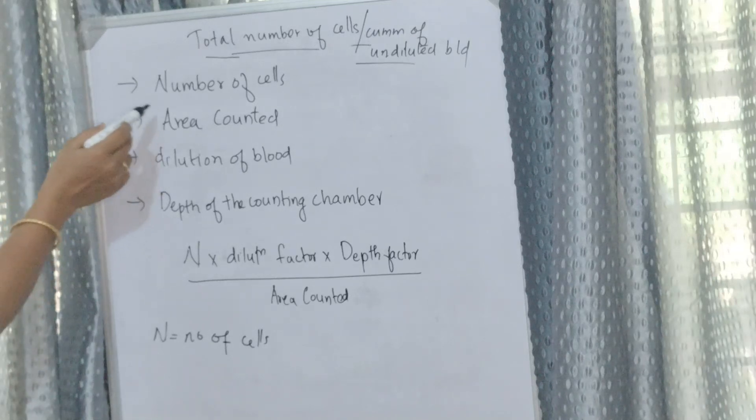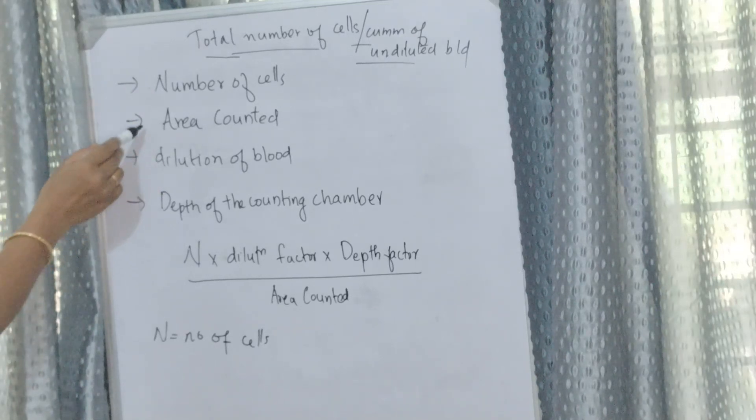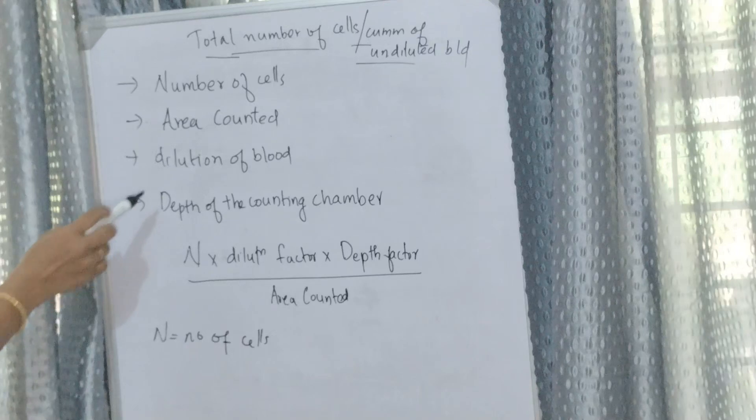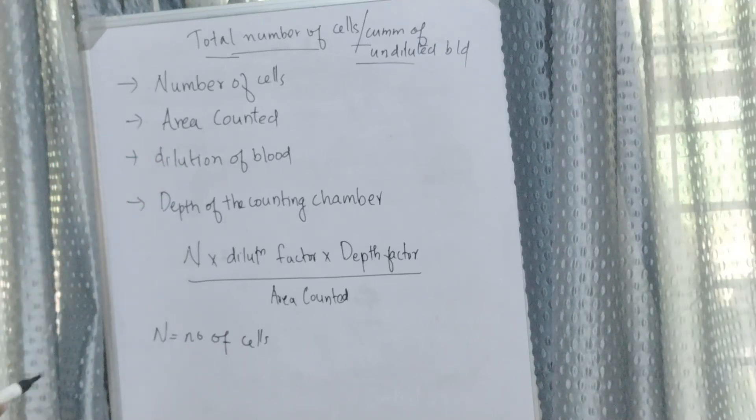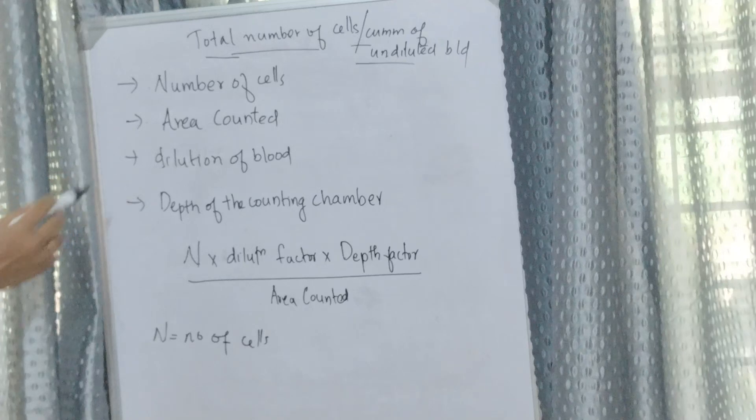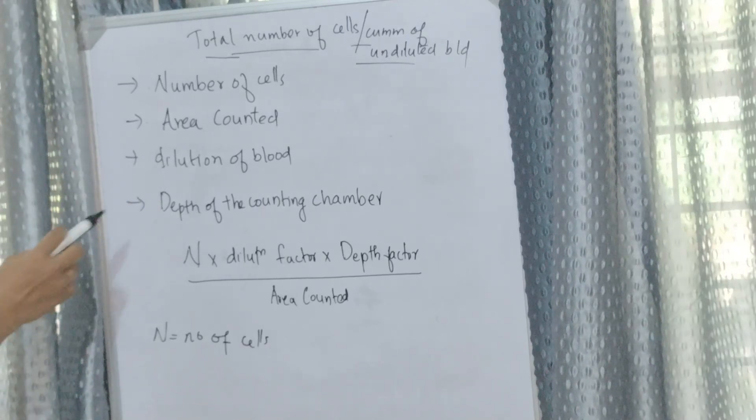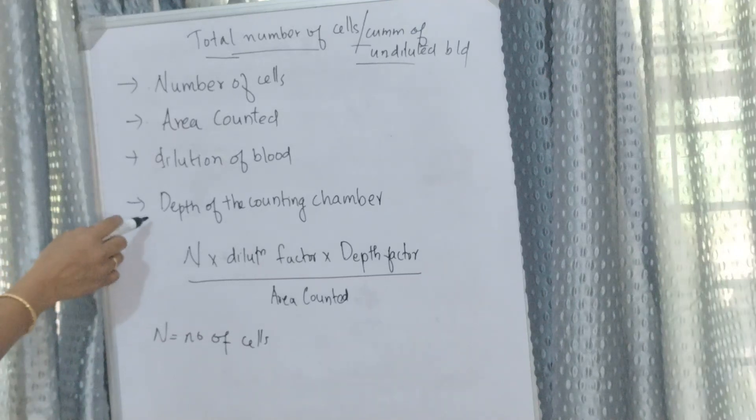By knowing the number of cells, area counted (which will be different for RBC and WBC counting), dilution of blood (also different for each blood cell count), and depth of the counting chamber, we can calculate. Depth of the counting chamber only depends upon the type of counting chamber.